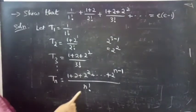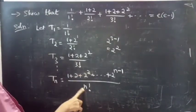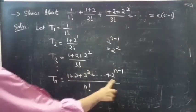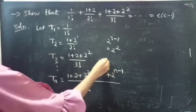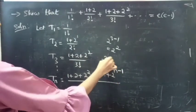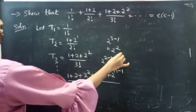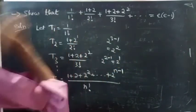Likewise, if you substitute n equals to 2, you will get 2 factorial and the last term will be 2 power 2 minus 1, which equals to 2 power 1.